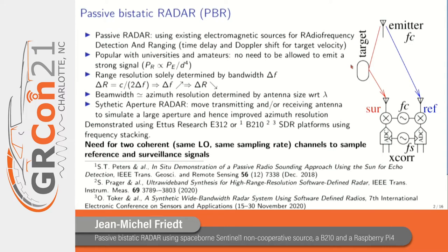Why does radar require high power at large bandwidth? First, because the received power decays as the fourth power of the distance in a monostatic approach — the emitter transmits toward a target which appears as a point-like source, giving 1/d² times 1/d², which is 1/d⁴. So we do need high power emission. Furthermore, range resolution — the accuracy with which distance can be estimated — is solely dependent on the inverse of the bandwidth. Range resolution equals the velocity of light divided by twice the bandwidth.